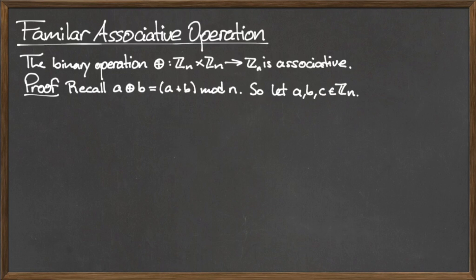O plus is defined as a o plus b equals the quantity a plus b mod n. Here we will prove that this binary operation o plus is associative.